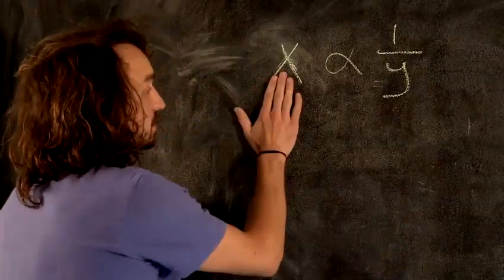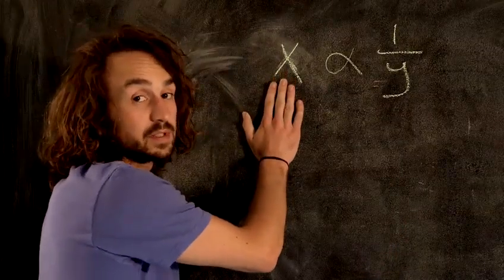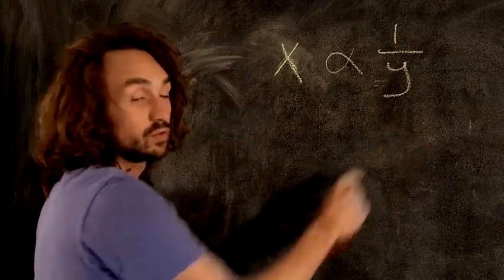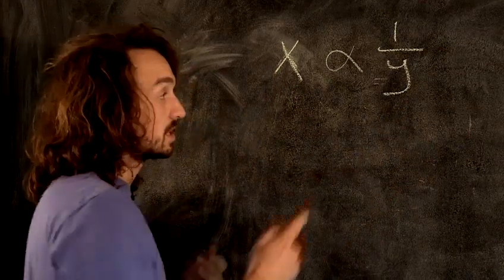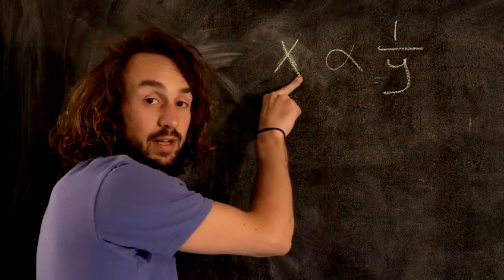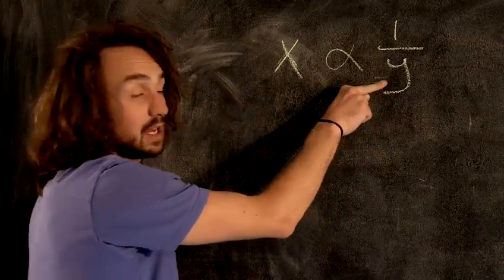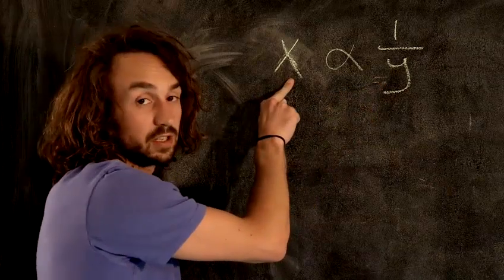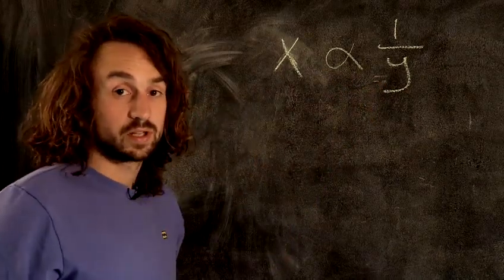So if X represents the number of winter jackets I'm selling, this Y represents the temperature. So as you can think about it, as the temperature goes up, the number of winter jackets sold goes down. As the temperature goes down, the number of winter jackets goes up. That is what inverse proportion does.